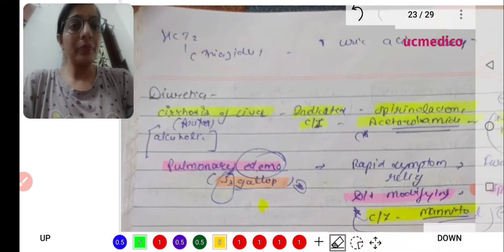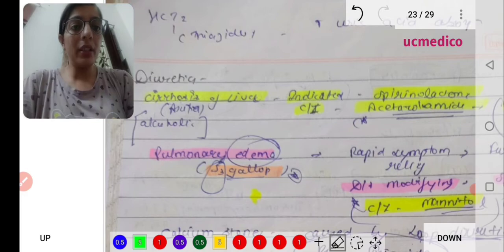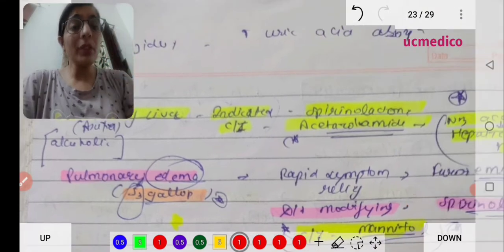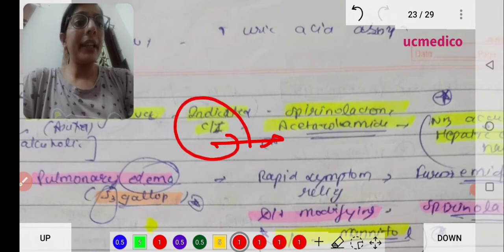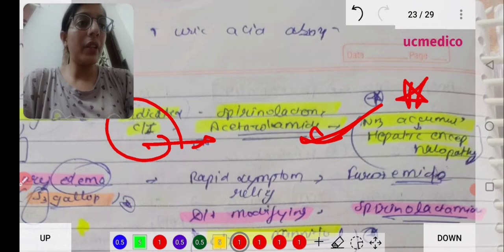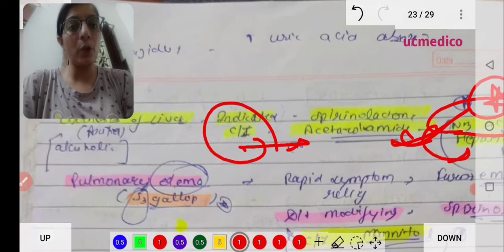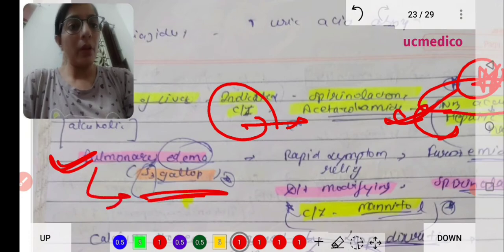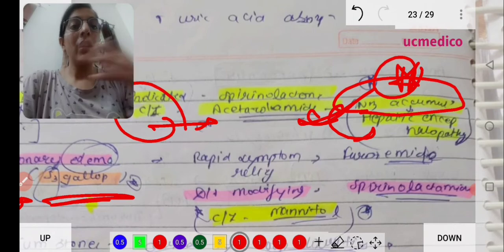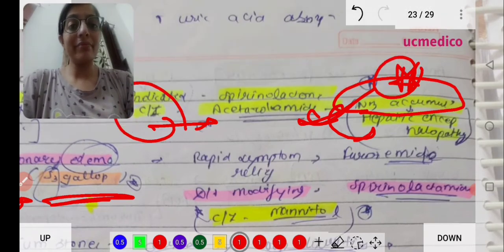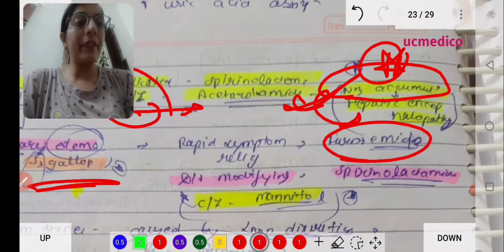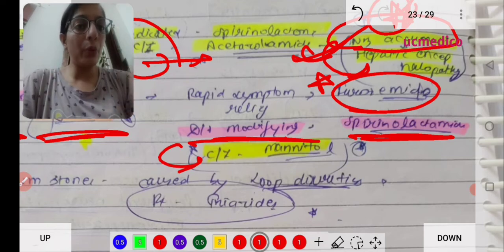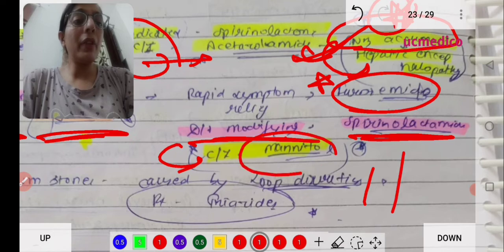Let's move towards the next page - diuretics. In cirrhosis of liver, if a patient has ascites, we give spironolactone to maintain the potassium and sodium. Contraindicated is acetazolamide because it causes further accumulation of ammonia and leads to hepatic encephalopathy. In pulmonary edema, we can hear S3 gallop. For rapid relief, we give diuretics, that is furosemide, a loop diuretic. The disease-modifying drug is spironolactone.